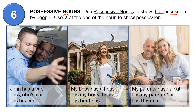Use apostrophe and S at the end of the noun to show possession. For example, John has a car, so it is John's car — John apostrophe S. It shows the car belongs to John, John's possession. And then the possessive adjective: it is his car.